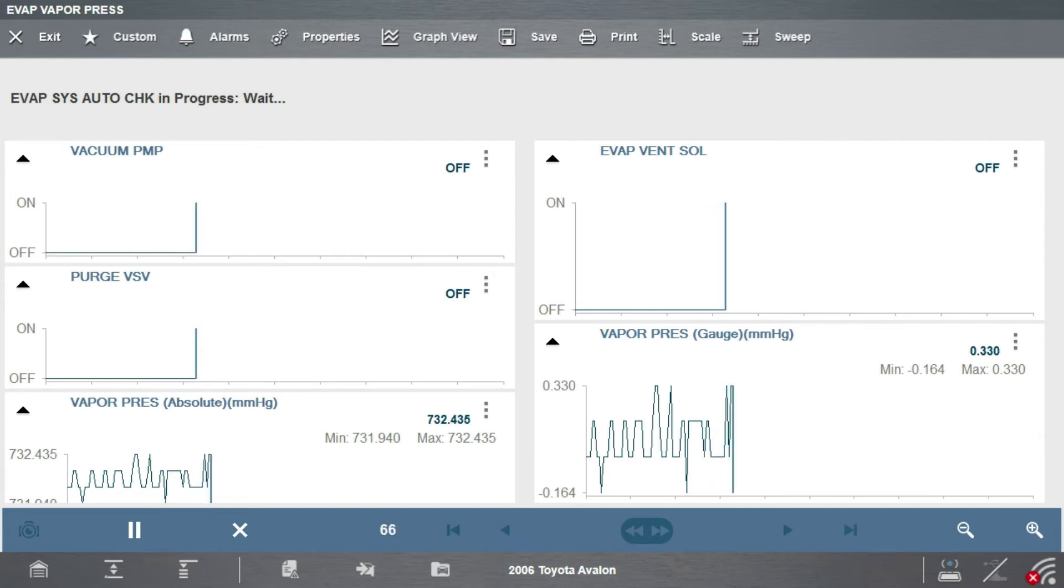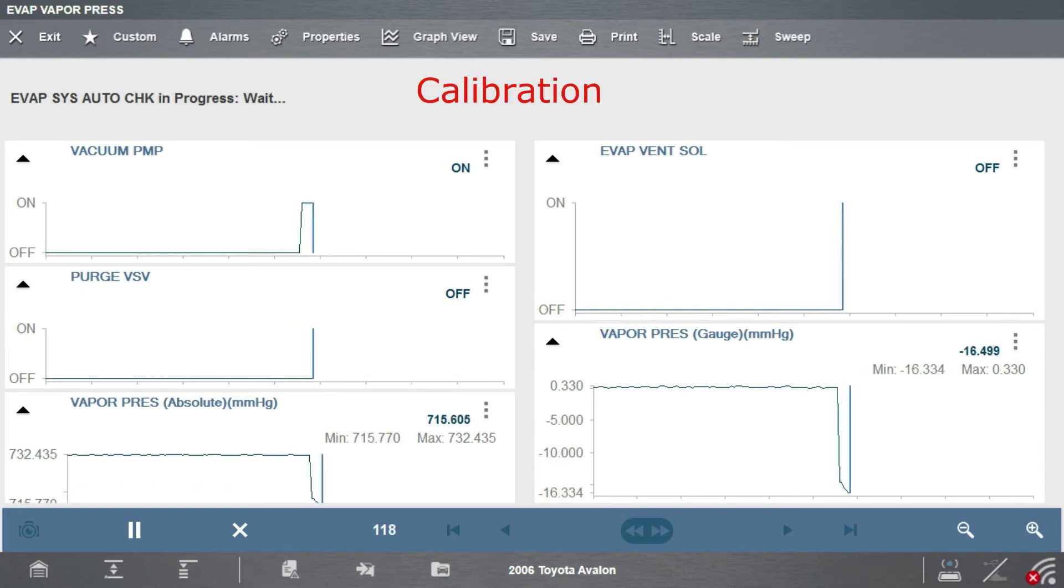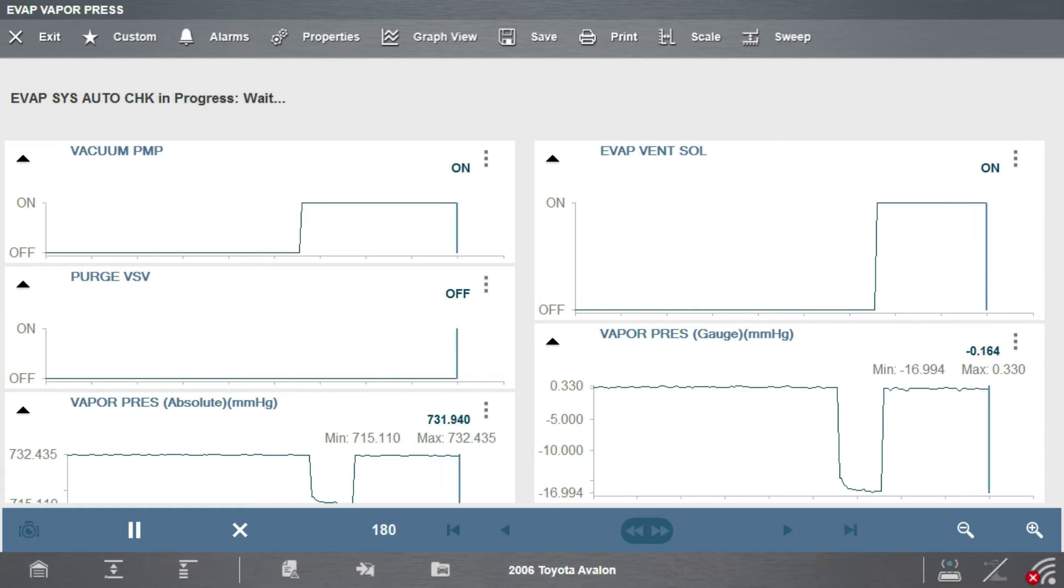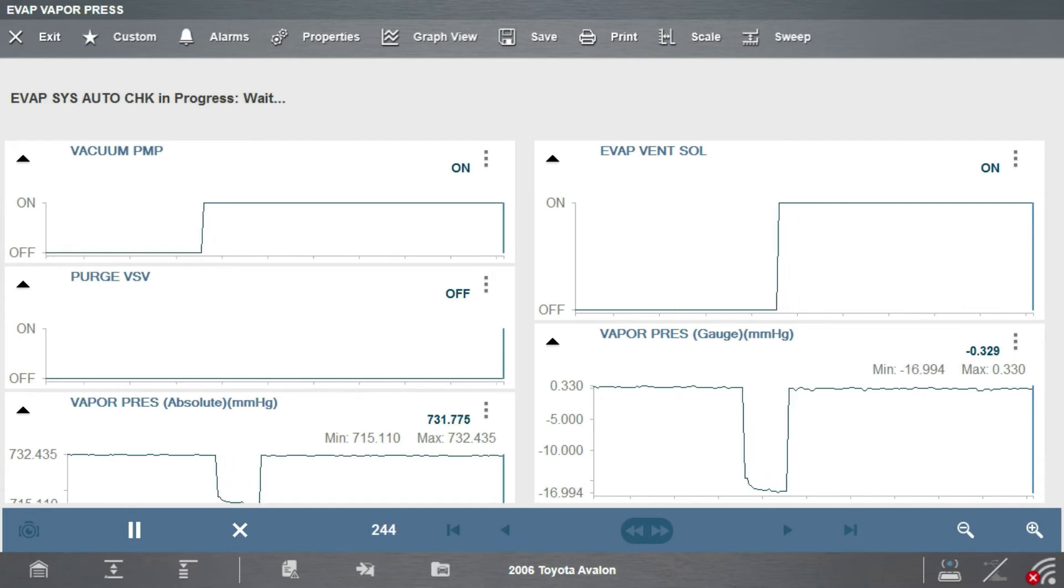I always choose graphing mode, so we'll go graphic display. Important data on screen: top left is vacuum pump, purge valve next one down, top right corner vent valve, bottom right is fuel tank pressure. Notice trace pressure in the tank, everything turned off. Vacuum pump turns on and very rapidly we build 16, not quite 17 inches of water column. That's my calibrated value. Then the vent valve turns on, so I'm plumbed to the tank and EVAP system. Notice no vacuum whatsoever develops in this EVAP system. This thing absolutely has a gross leak.